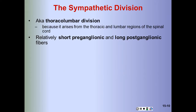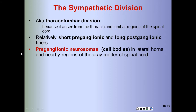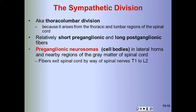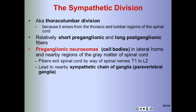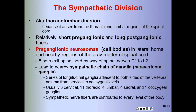The sympathetic division is also called the thoracolumbar division because it arises from the thoracic and lumbar regions of the spinal cord. The pre-ganglionic neurons are in the lateral horns of the spinal cord gray matter, and their fibers exit via spinal nerves T1 through L2, leading to the sympathetic chain of ganglia. The number of ganglia varies but typically there are approximately 3 cervical, 11 thoracic, 4 lumbar, 4 sacral, and 1 coccygeal ganglion.